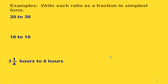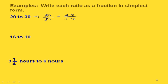We're going to do some examples of writing each of these ratios as fractions in simplest form. Starting with 20 to 30: since the 20 came first, it goes on top and the 30 goes on the bottom. We write each factored with the 10 factored out, and that gives us two-thirds in simplest form.